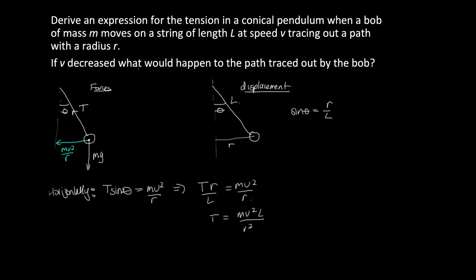And so if v decreased what would happen to the path traced out by the bob? Well as T decreased, this centripetal acceleration is going to decrease so the radius is going to get smaller.